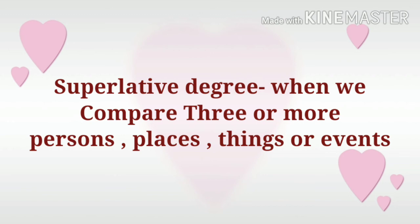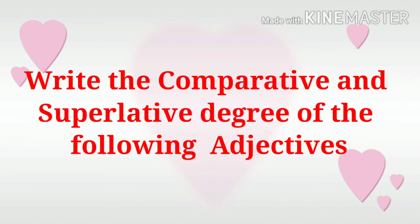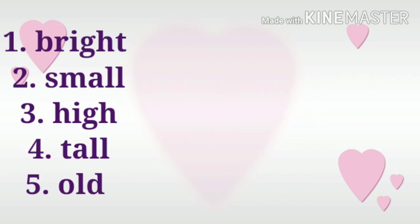Now I want you to get your paper and pen and write the comparative degree and superlative degree of the following adjectives. Number one: bright. Number two: small. Number three: high. Number four: tall. Number five: old. Are you ready to check your answers? Let us check your answers — you're going to tell me the comparative degree and superlative degree of the following adjectives.